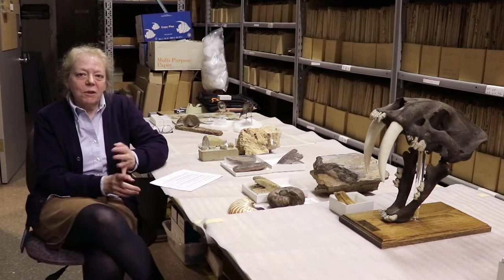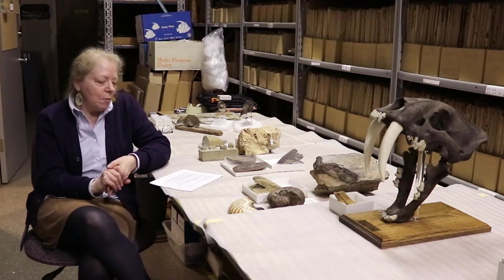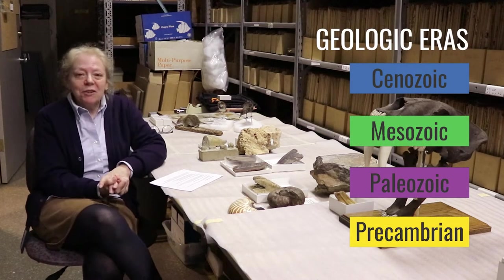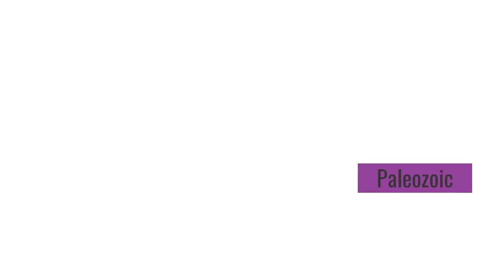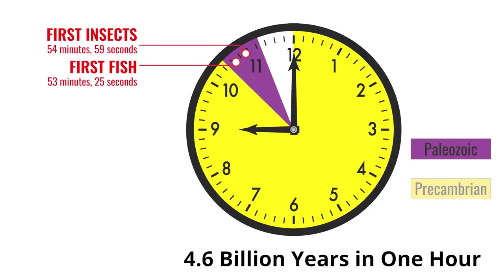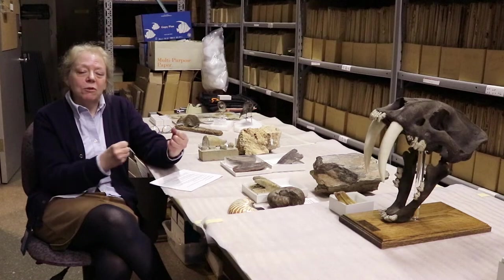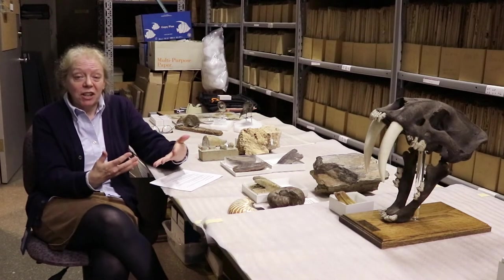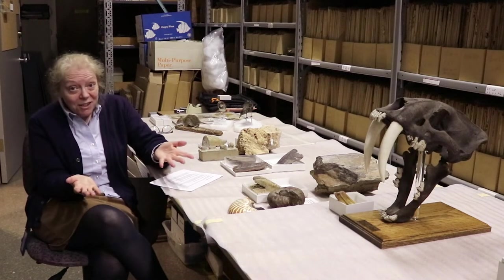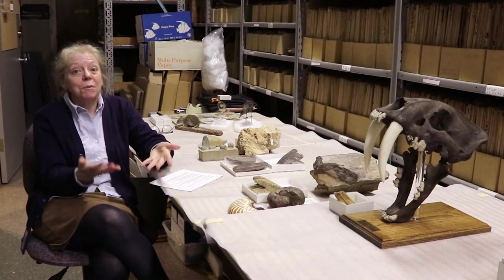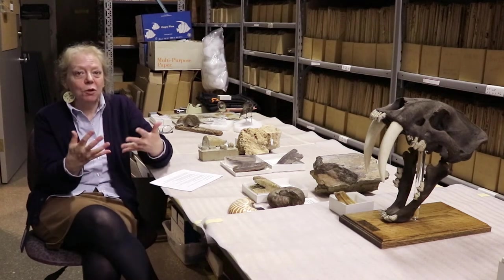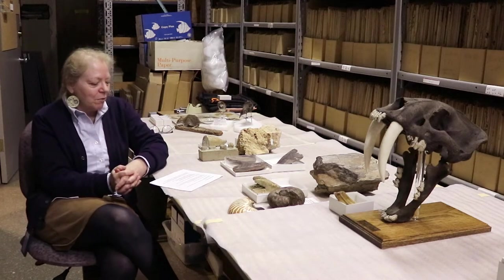Starting with the Paleozoic — which means 'ancient life' — around 500 million years ago there was a big bang, an explosion of animals with hard body parts that could actually be preserved. Plants and animals suddenly were able to take calcium out of the environment and create hard shells. That's a bonus for a paleontologist, because it means they're much more easily preserved and we have an actual record of them.